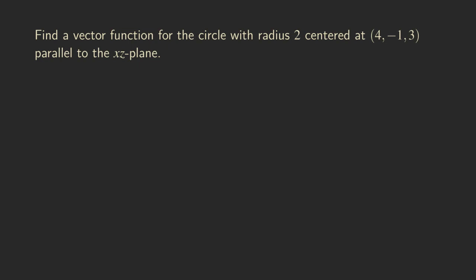Hello everyone, it's Wilson here. Today, I want to talk about how to find a vector function for a circle with radius 2 and center at the point (4, -1, 3). Also, we want the circle to be parallel to the xz plane.